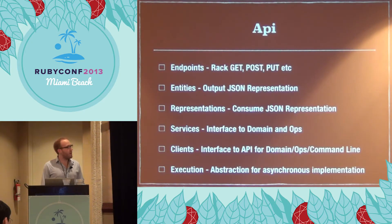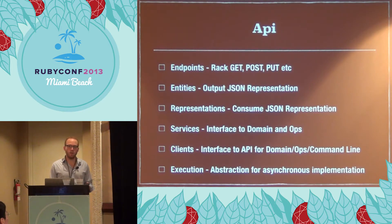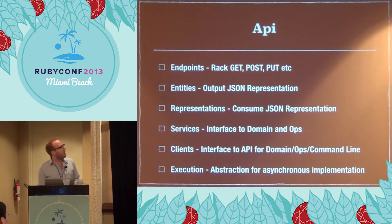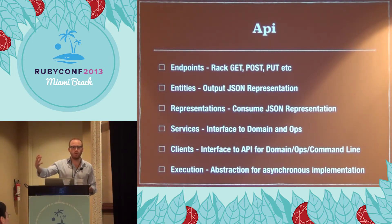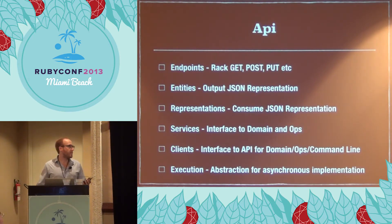The API has endpoints — it's just Rack, pretty simple. We're using Grape, which is really nice for writing quick APIs in Ruby. Grape has entities which map domain objects to the JSON representation. We're using JSON in, JSON out. When we consume a representation that a client has modified, it's called a representation — which is not a great name — but that takes a representation back into the domain layer.